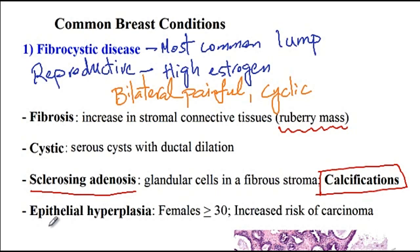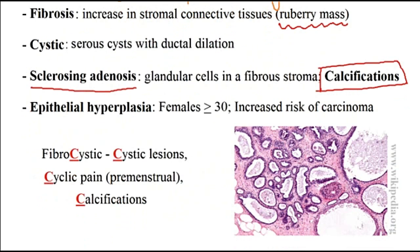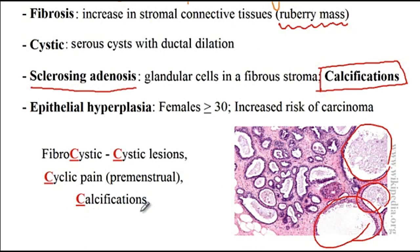The fourth type is epithelial hyperplasia, which commonly presents in females older than 30 years of age, and this type of fibrocystic disease increases the risk of carcinoma. Here is a histology of fibrocystic disease where you can see the cysts, and I've provided a memory aid to make memorization of the features easier.